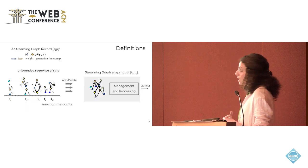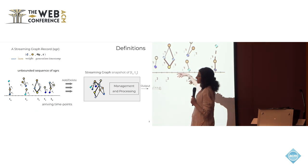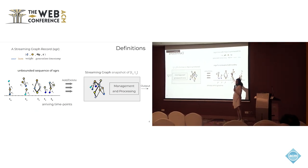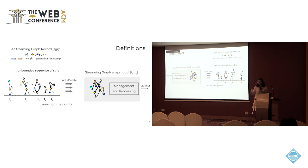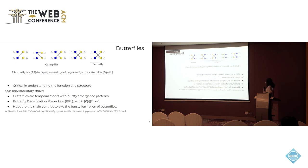We defined the streaming graph as an unbounded sequence of data records — streaming graph data records — where each of these data records is a weighted edge with a timestamp that is assigned by the generative source. We studied the user-item streams and focused on butterfly structures or subgraphs in these streams, because butterflies, which are the smallest form of cycles in a bipartite graph, are crucial for understanding the function and structure of the graphs.